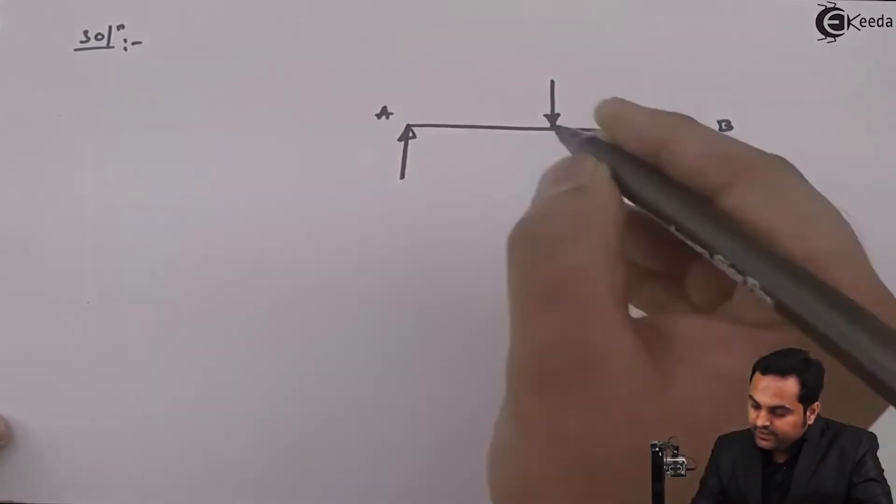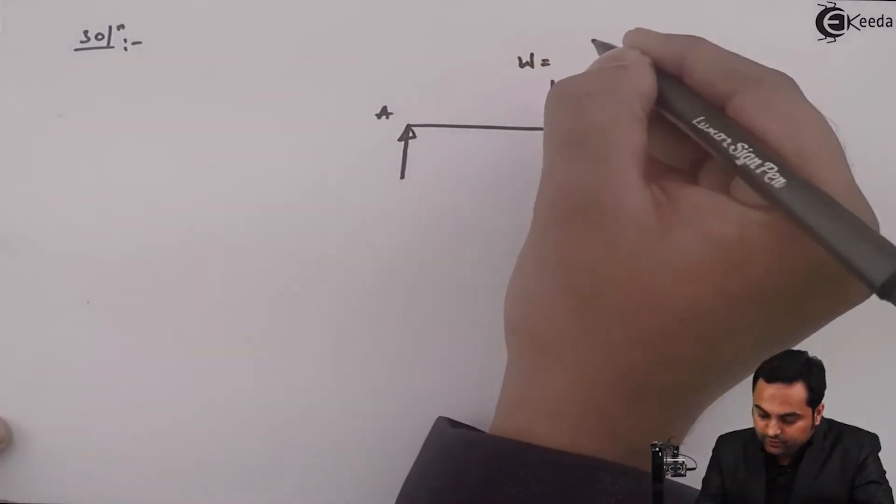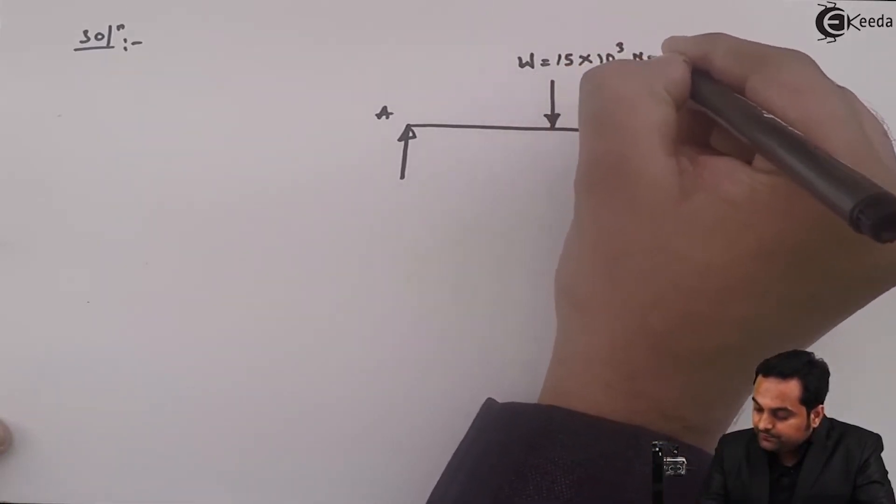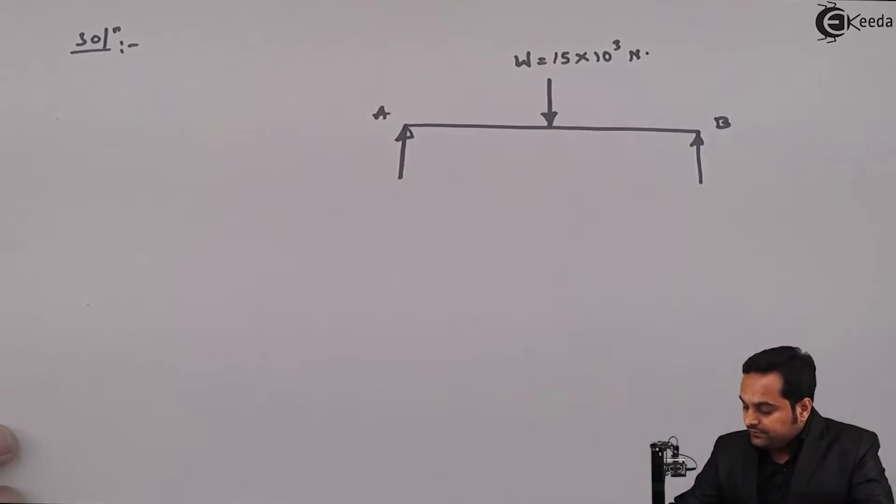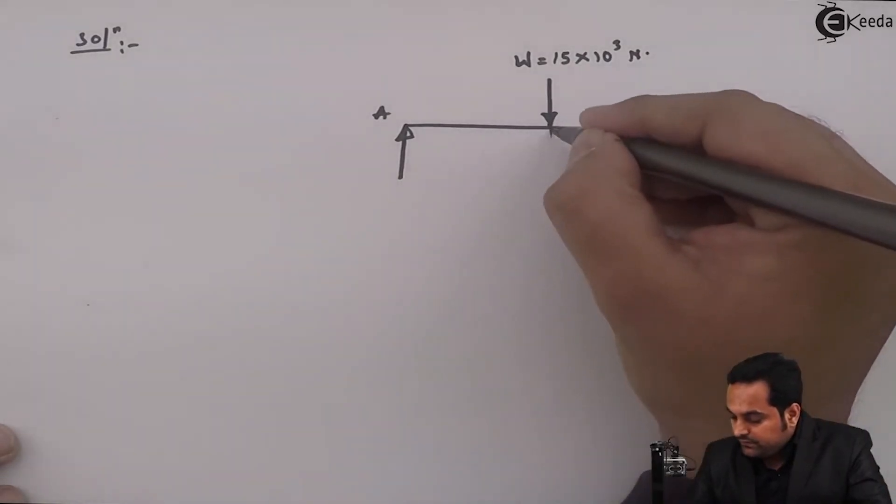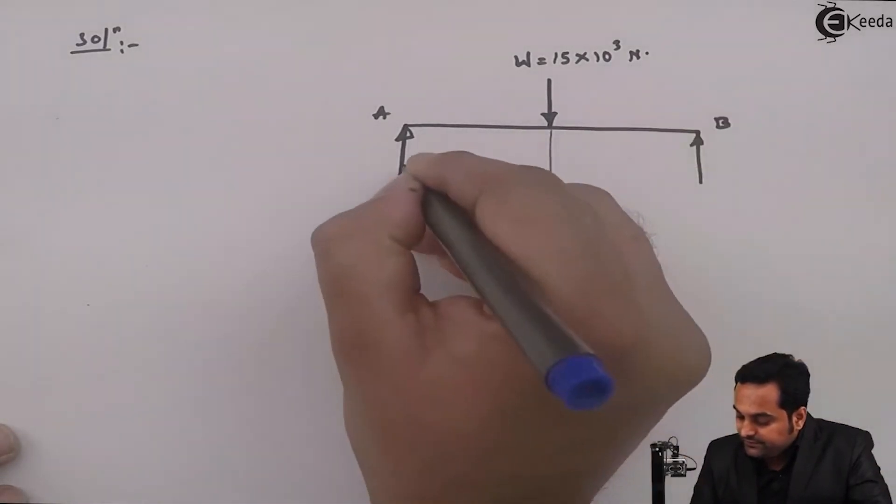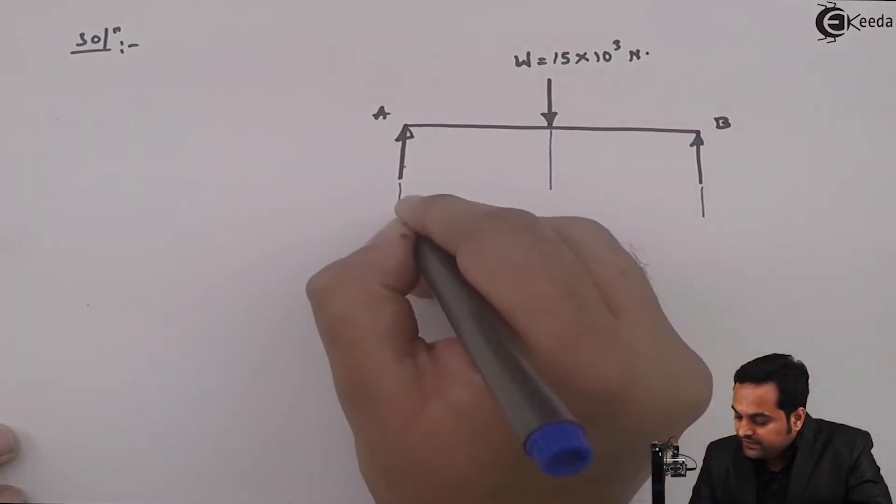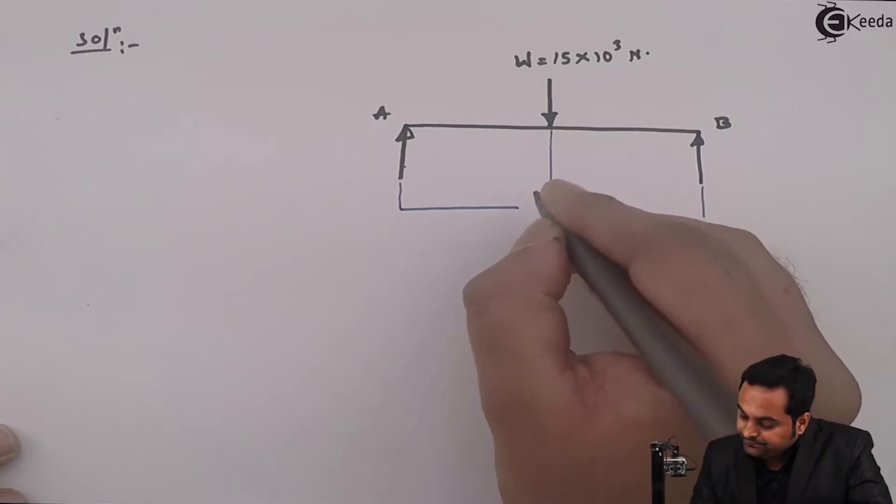Having point load at the center, load value is 15 into 10 raise to 3 Newton. Then, since the load is acting at the center, the total distances or the total span is L is equal to 1.2 meter.